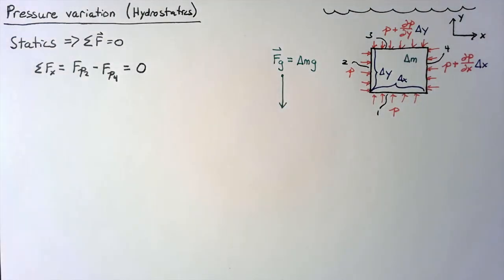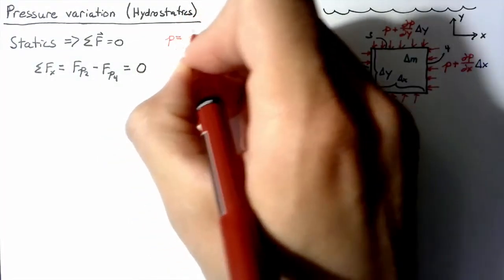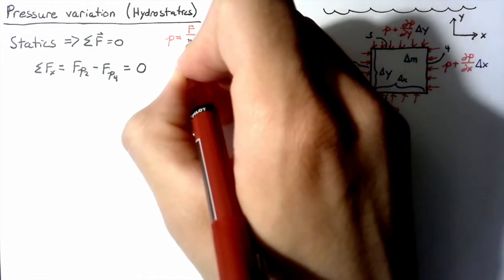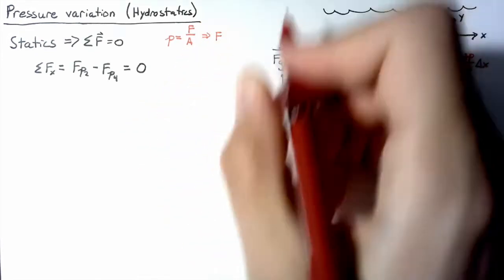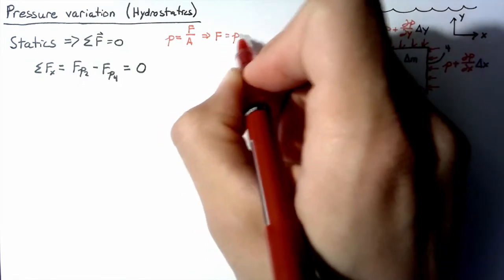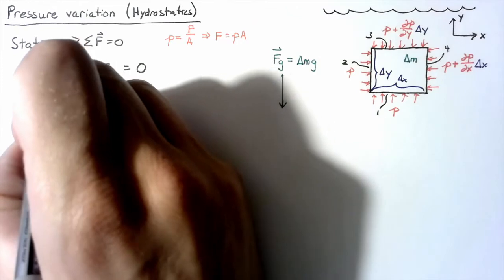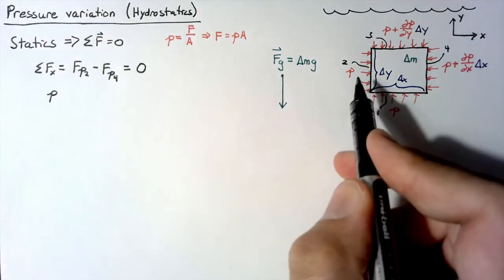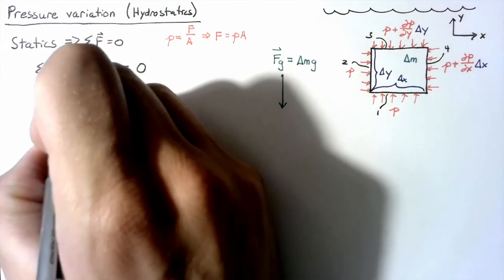How do we get from pressure to a force? Well, pressure is just going to be equal to the total force divided by the area, which means that the force is going to be equal to pressure multiplied by our area. So the force on face 2 is just going to be equal to the pressure on face 2, which was just P multiplied by the area of face 2.